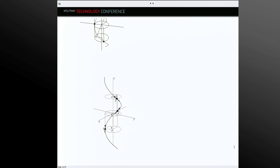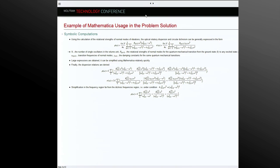I will show you examples of usage of Mathematica in solution and computation of optical activity for crystals. At first, we use Mathematica for symbolic computations using the calculation of rotation and strength of normal mode vibration. The optical rotator dispersion and circular dichroism can be expressed in this form.